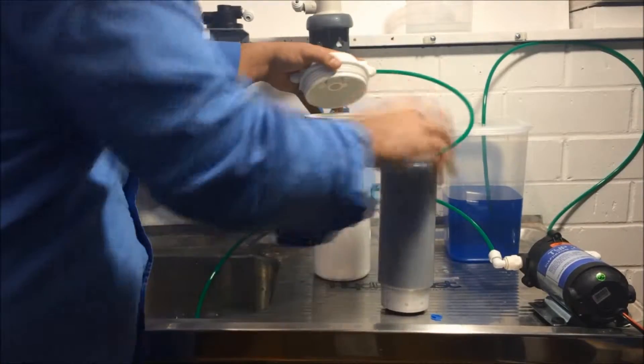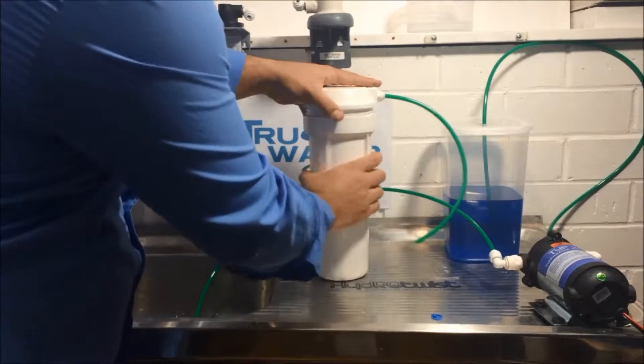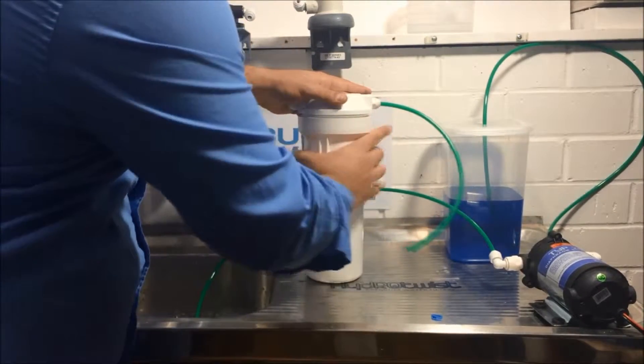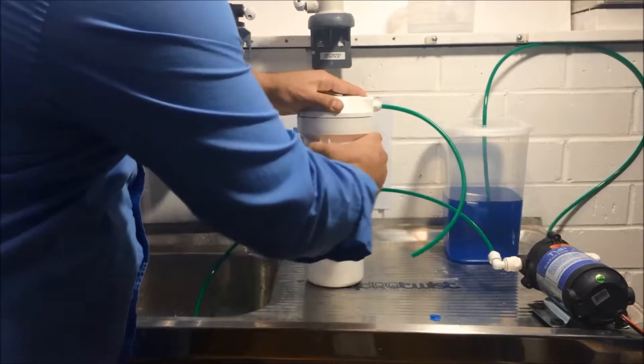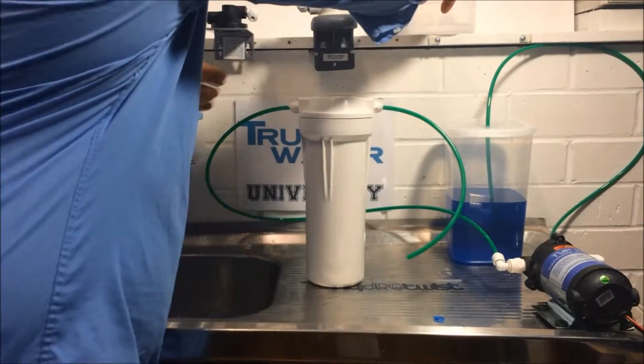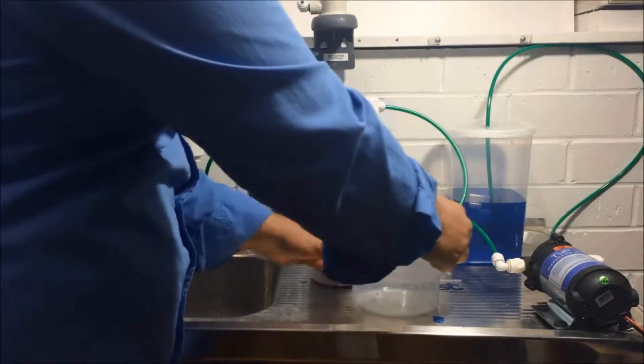The first is the Aquapure AP117. This filter has two sediment filters, one at each end. These are to take out larger particles such as dirt. Then the water moves through a granular carbon filter.